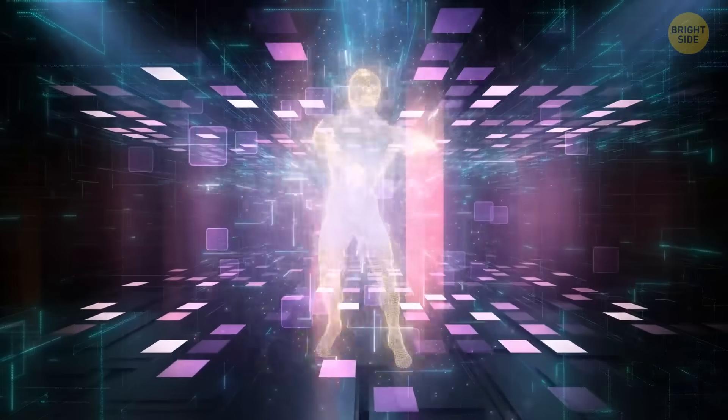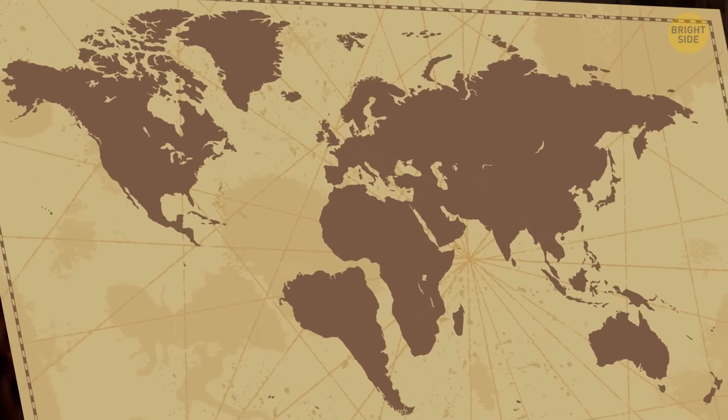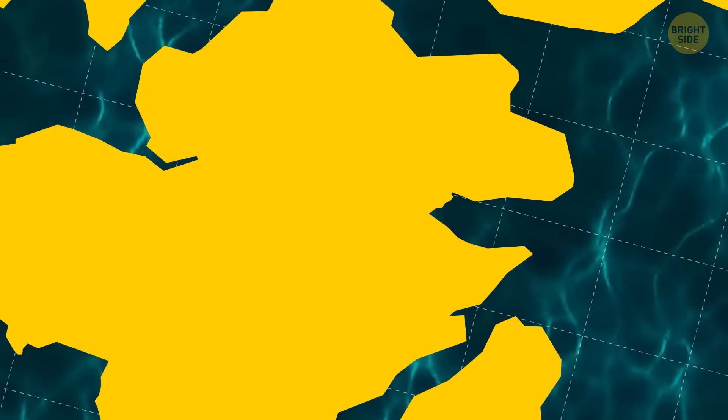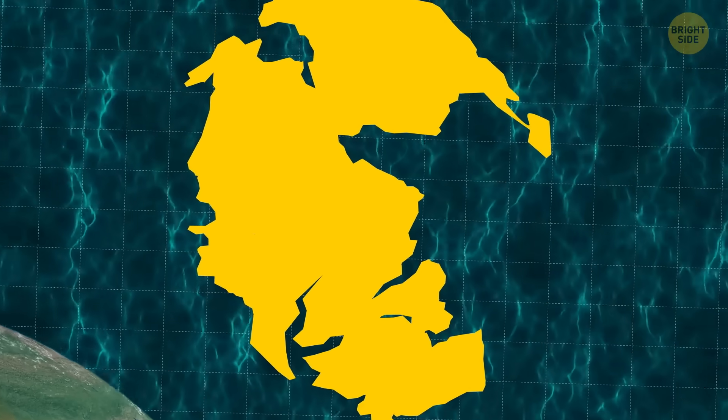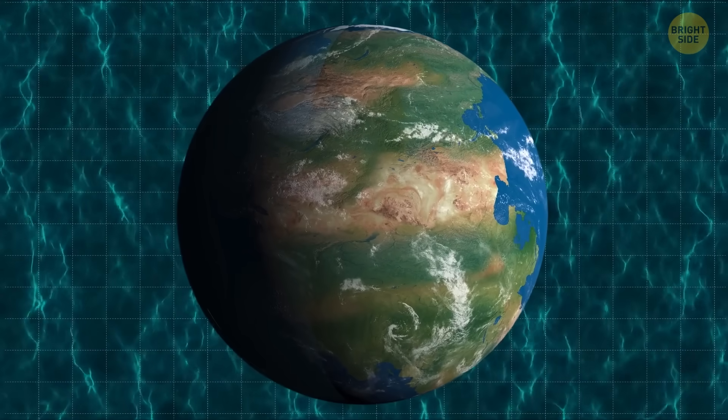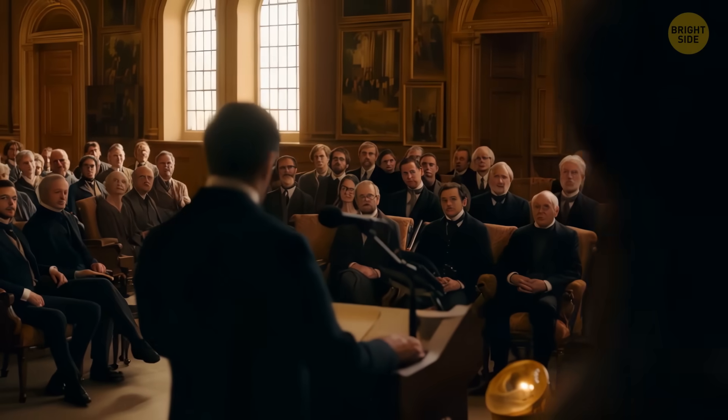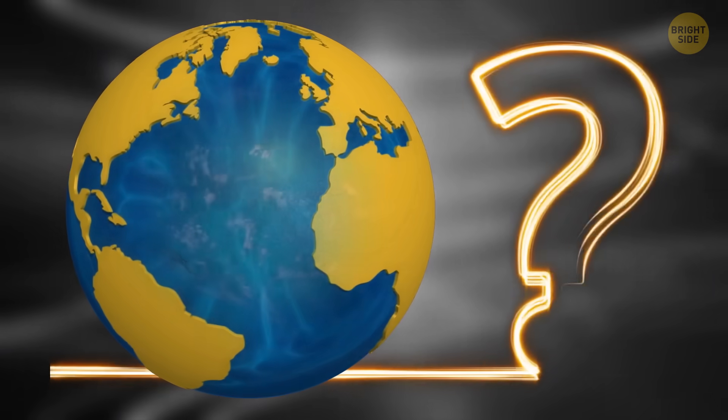One day, Wegener looked at the shapes of the continents and thought that, hey, those coastlines of South America and Africa kind of fit together. And they really did. So he imagined that way back, all of the continents hung out together as one big landmass. But he couldn't just go and say that without any proof. So how do we know Pangaea really was a thing?